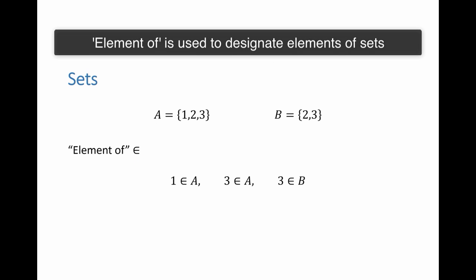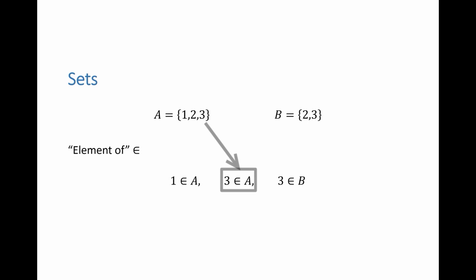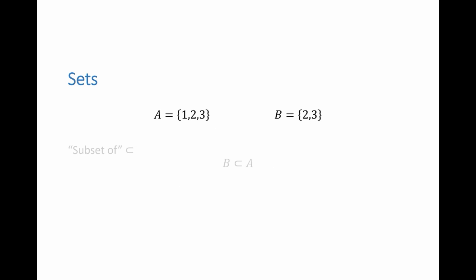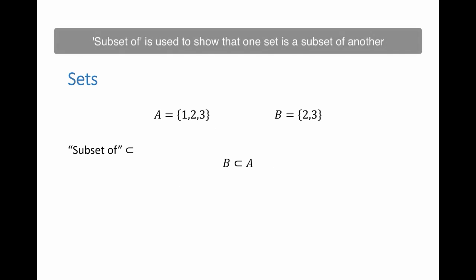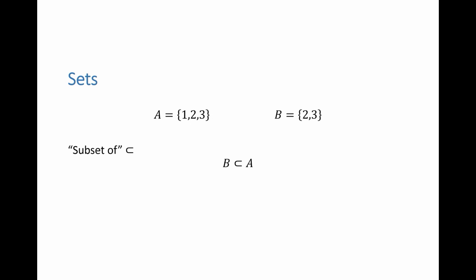The symbol 'element of' is used to designate elements of sets. For example, 1 is an element of A, 3 is an element of A, and 3 is an element of B. The symbol 'subset of' is used to show that one set is a subset of another. For example, B has elements 2 and 3, and A has elements 1, 2 and 3. All the elements of B already exist in A, so we can say that B is a subset of A.